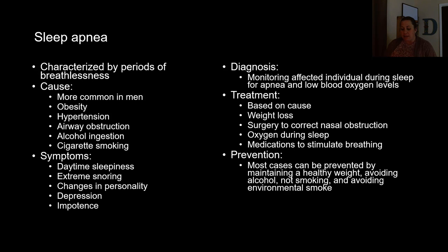This finishes up part two of the nervous system disorders and diseases. Part three will focus on tumors, trauma, spinal injuries, brain injuries, and rare diseases like Huntington's and ALS. If you have any questions or concerns, please let me know.